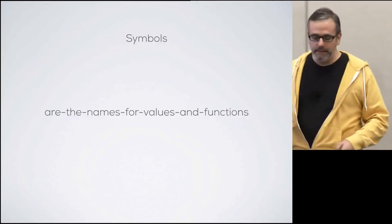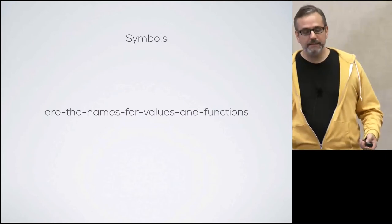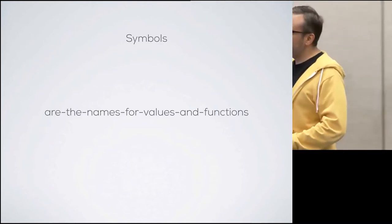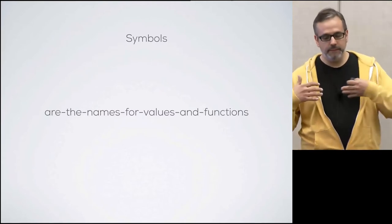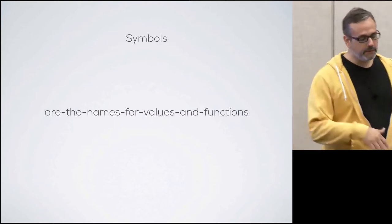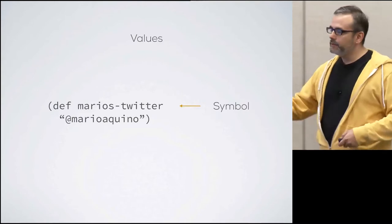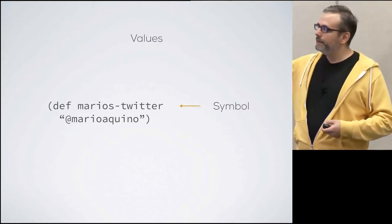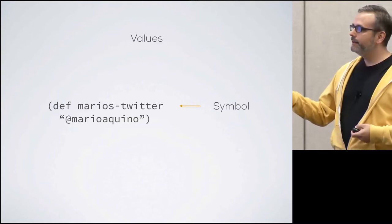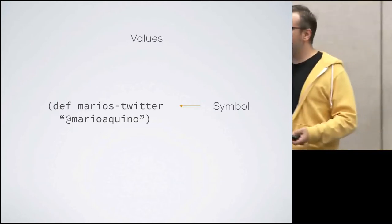Symbols are any named thing that lives inside the namespace you happen to be in, or any other namespace that exists. They can be data structures with a name or a function — symbols point to those things so you can use them. Here we have a value called Mario's Twitter with the symbol name of Mario's Twitter, whose value is @MarioKino, my Twitter account.